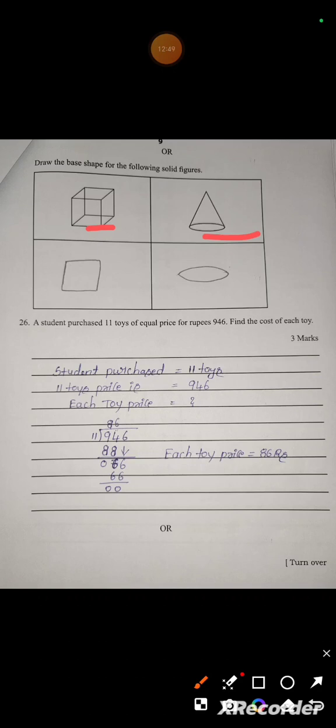A student purchased 11 toys of equal price for rupees 946. Find the cost of each toy. Divide 946 by 11: 11 eights are 88, subtract to get 6, 11 sixes are 66. Each toy price is 86 rupees.